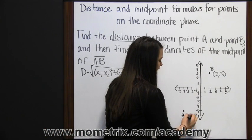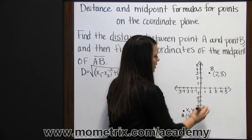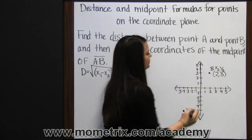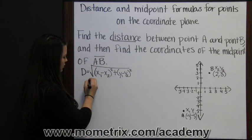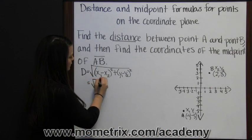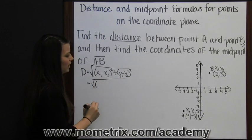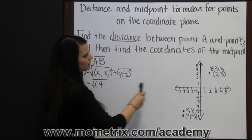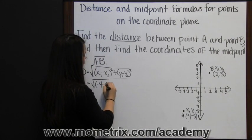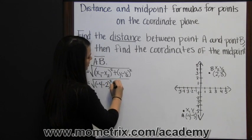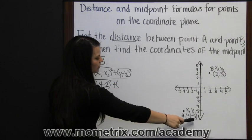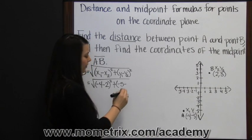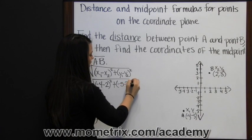I'm going to use A as my x1, y1, and I'll use B as my x2, y2. So now we can substitute into our distance formula: the square root of x1, negative 4, minus x2, which is 2, squared, plus y1, negative 5, minus y2, 3, squared.